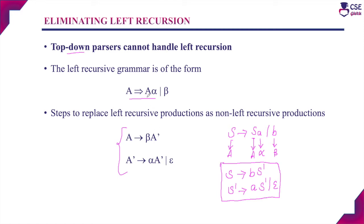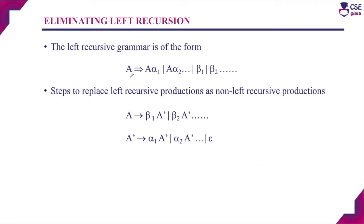Suppose the given grammar has more than one alpha production and more than one beta production, then the general form is different. If the left recursive grammar is A derives A-alpha1 or A-alpha2 or A-alpha3 and so on, with beta productions beta1, beta2, beta3 likewise, we eliminate left recursion using two steps: the first step is A derives beta1 A-dash or beta2 A-dash or beta3 A-dash likewise, and the second step is A-dash derives alpha1 A-dash or alpha2 A-dash or alpha3 A-dash likewise, or finally epsilon.